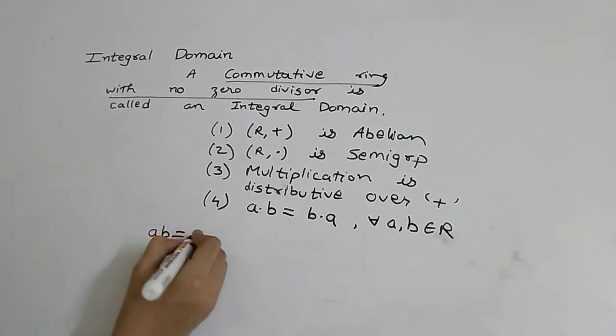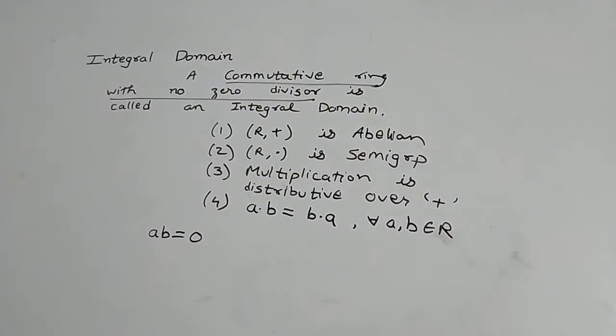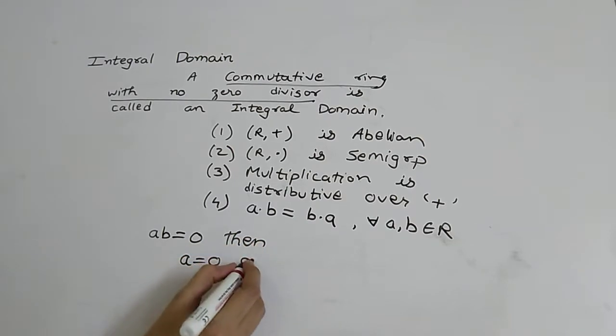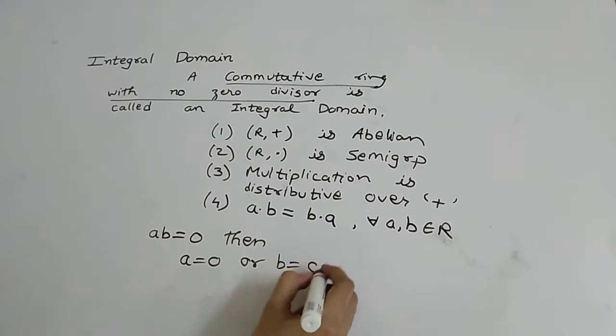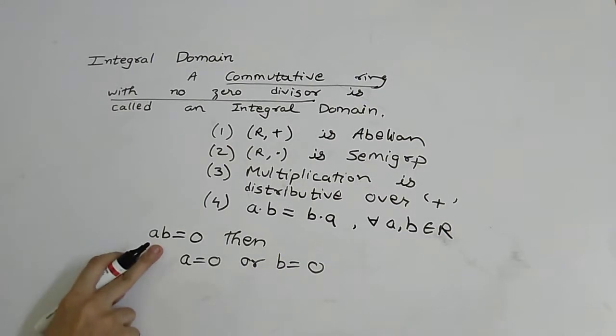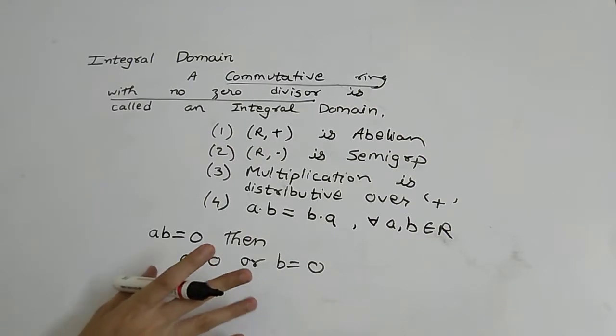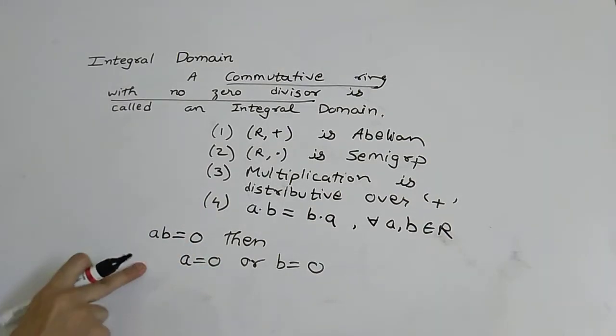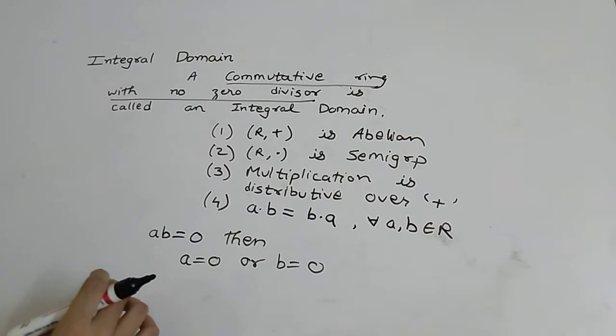If a, b is equal to zero, then either a is equal to zero or b is equal to zero. If this property is satisfied, then we say that R is a ring without zero divisor or with no zero divisor. So we will show this then we can say that R is an integral domain.